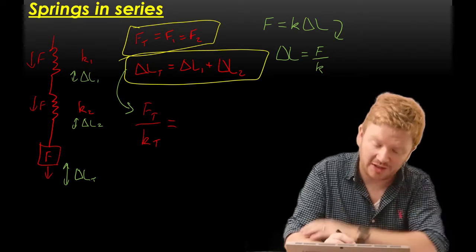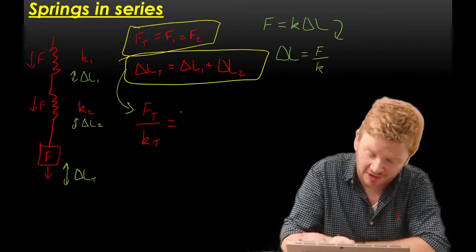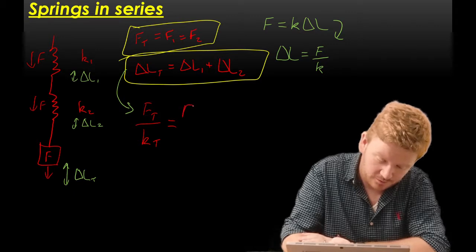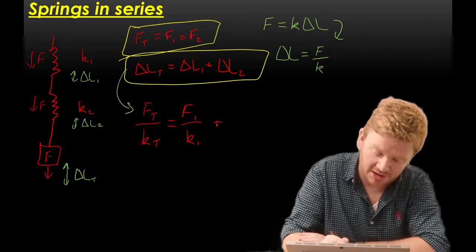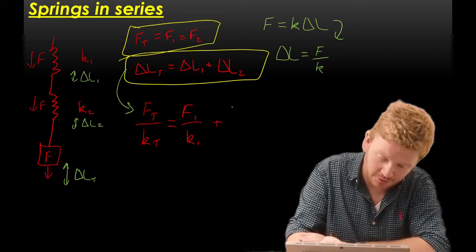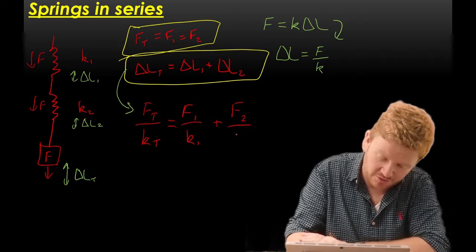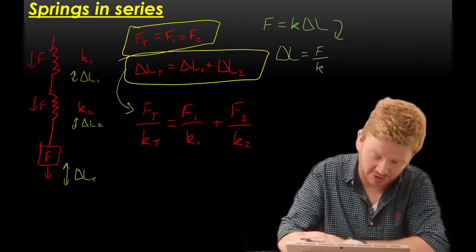Now, this equation is still valid, so I can then rewrite delta L1. Delta L1 will be the force on spring 1 divided by the spring constant of spring 1. And if I rewrite my third term, that would be delta L2 is equal to the force on spring 2 divided by the spring constant of spring 2.